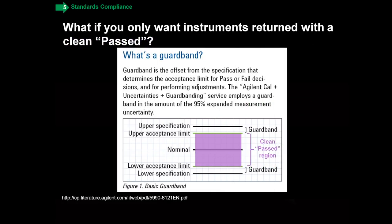Some of our more demanding customers say, 'when it's sent back to me I don't want to see any of those F double daggers or the U for uncertain.' We understand that, and that's really what a guard band is all about. A guard band is simply the offset from the specification that determines the acceptance limit for pass or fail decisions and where we perform adjustments.